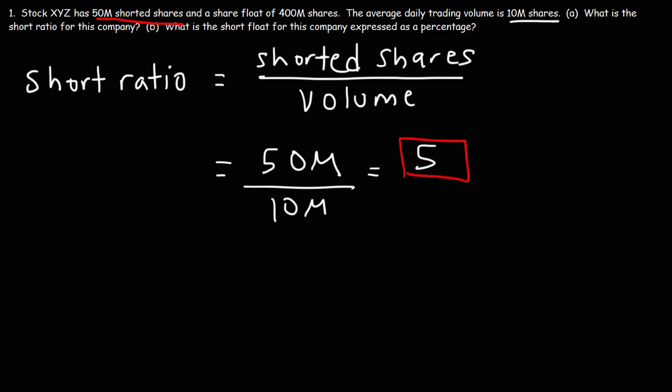The short ratio tells investors how many days it will take short sellers to cover their positions if the price of a given stock were to increase. In this case, with an average daily trading volume of 10 million shares, it will take about 5 days for short sellers to cover their positions.